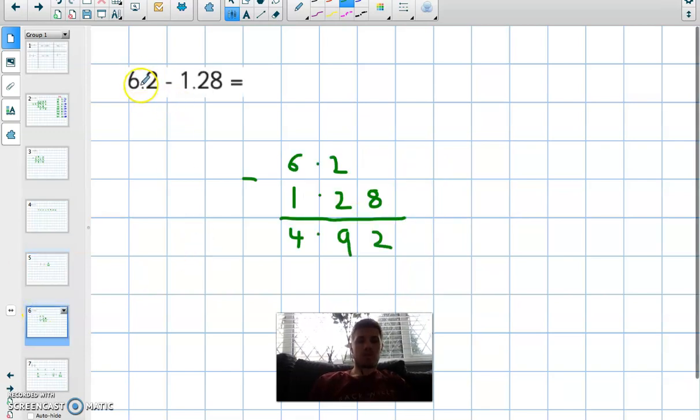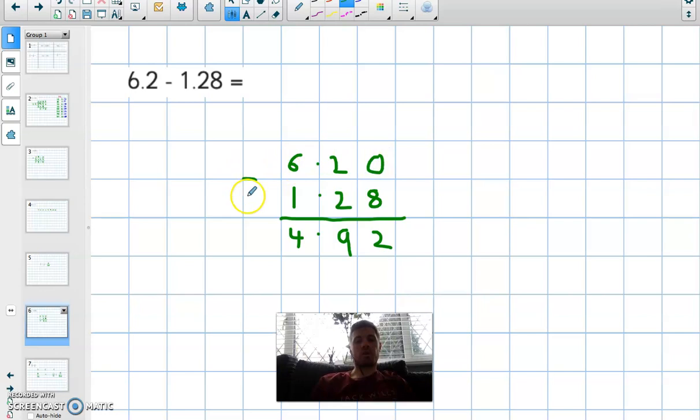6.2 subtract 1.28. I've used the formal method, and as you can see again I need to put in my placeholder. But this time the operation is subtract, so I'm taking this bottom number away from the top number. So zero take away 8 I can't do because this number here is smaller than the bottom number, so I need to borrow from the next door. I need to exchange.